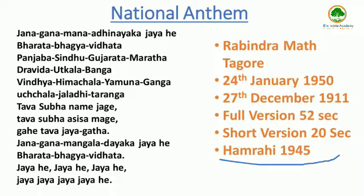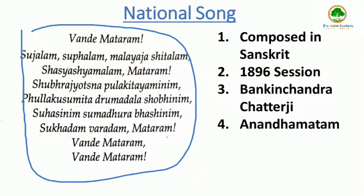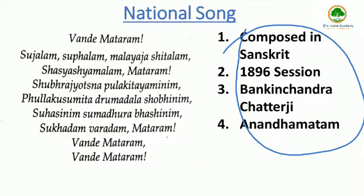National Song: Vande Mataram is a Bengali poem written and composed by Bankim Chandra Chatterjee in the 1870s, which he included in his 1882 novel Anandamath. The poem was first sung by Rabindranath Tagore in 1896 and it was a source of inspiration to the people in their struggle for freedom. The first two verses of the song were adopted as the National Song of India in October 1937 by the Congress Working Committee, prior to the end of colonial rule in August 1947. The English translation of the stanza was rendered by Sri Aurobindo in prose.